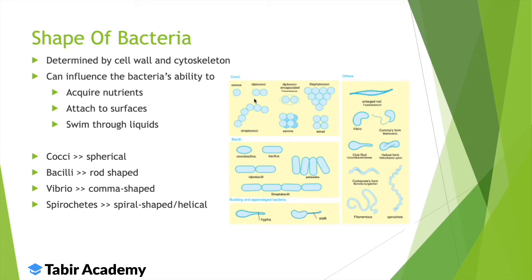The first group is cocci — they are round, spherical organisms. Bacilli are rod-shaped, having distinct length and width. Coccobacillus is a hybrid between the two. Vibrio is comma-shaped — if you curve a bacillus, you get a vibrio. The fourth shape is spirochete, which is helical — very long and spiraled in shape.